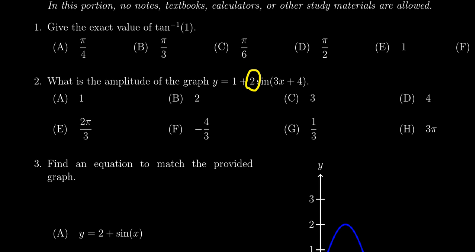The coefficient that lives in front of the sine or cosine function is the amplitude. Therefore, the amplitude of this sine wave is choice B, which is 2.